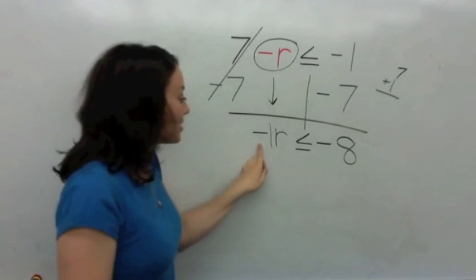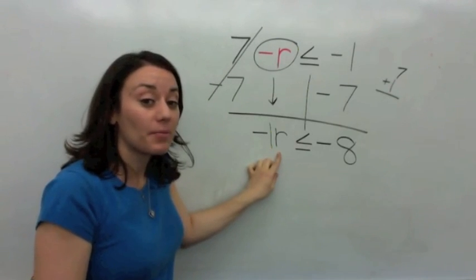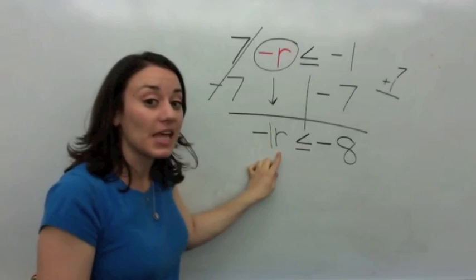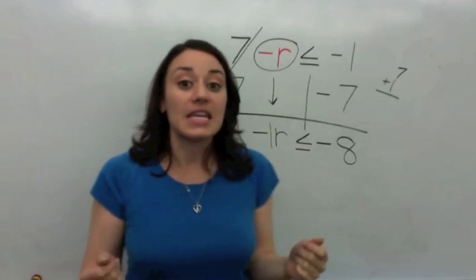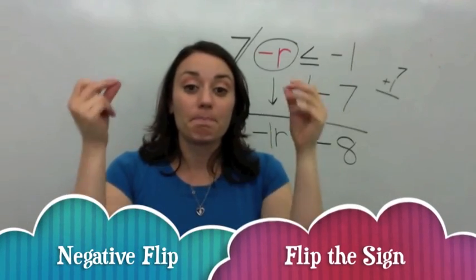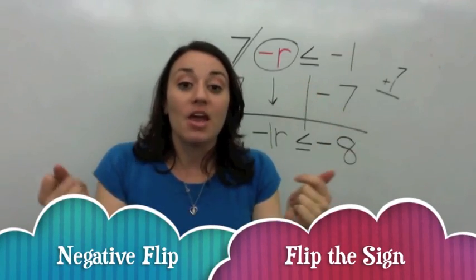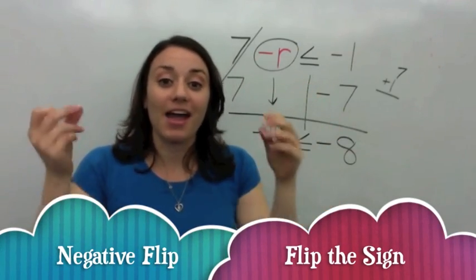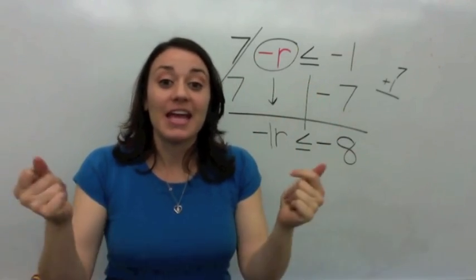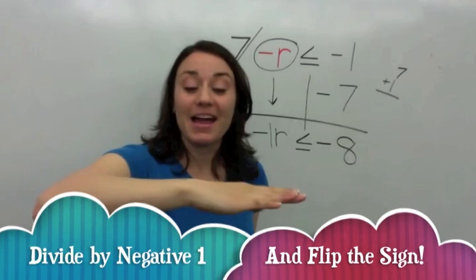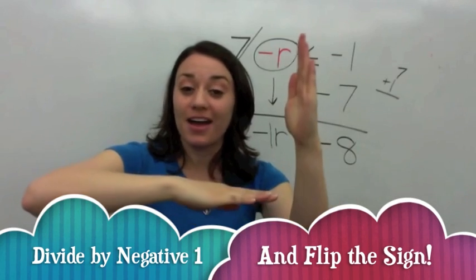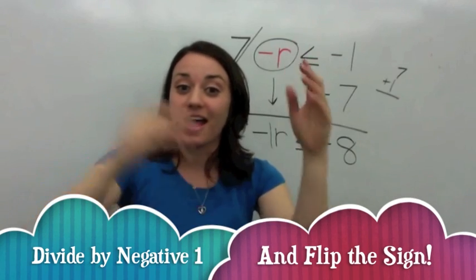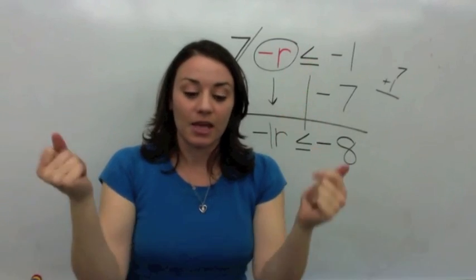You see a negative next to the variable, you're going to say: Negative flip! Flip the sign. Divide by negative 1 and flip the sign.